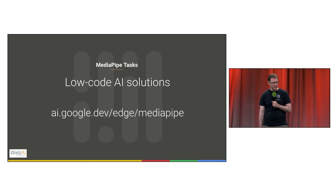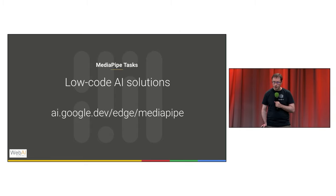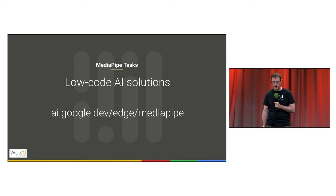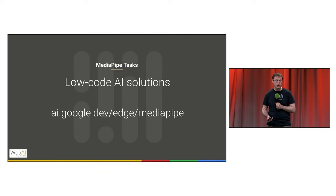Which brings us to MediaPipe Tasks, the successors to those APIs that Bilibili used. These are low-code, publicly available AI solutions to common machine learning problems, designed to support a wider range of models, faster, and with more customization than before. In order to run on GPU on most devices today, they run browser inference using WebGL, similarly to most of the applications I've previously mentioned. Just like the underlying framework, these tasks are cross-platform, so we do offer APIs for Android, iOS, Python, as well as web.